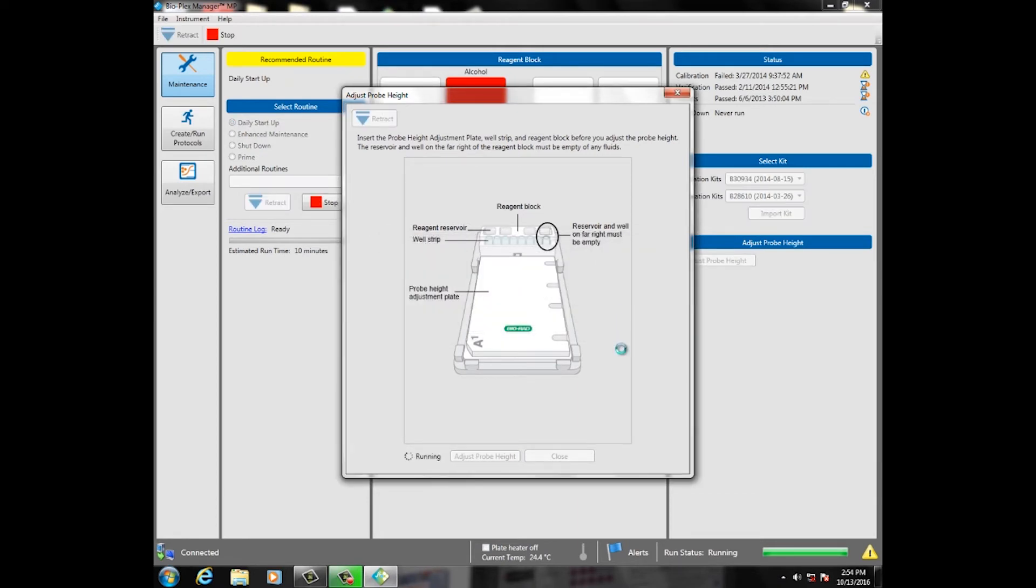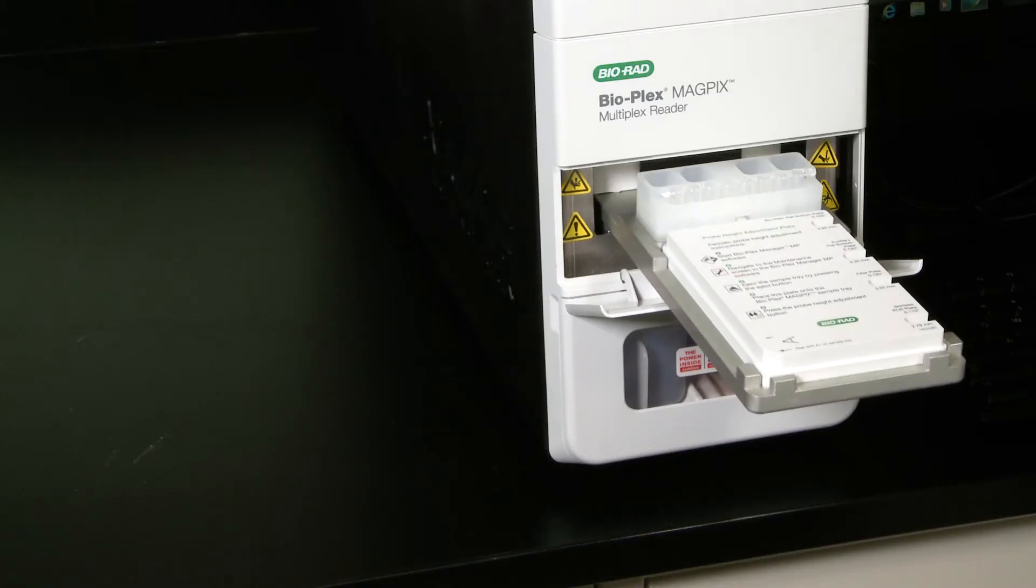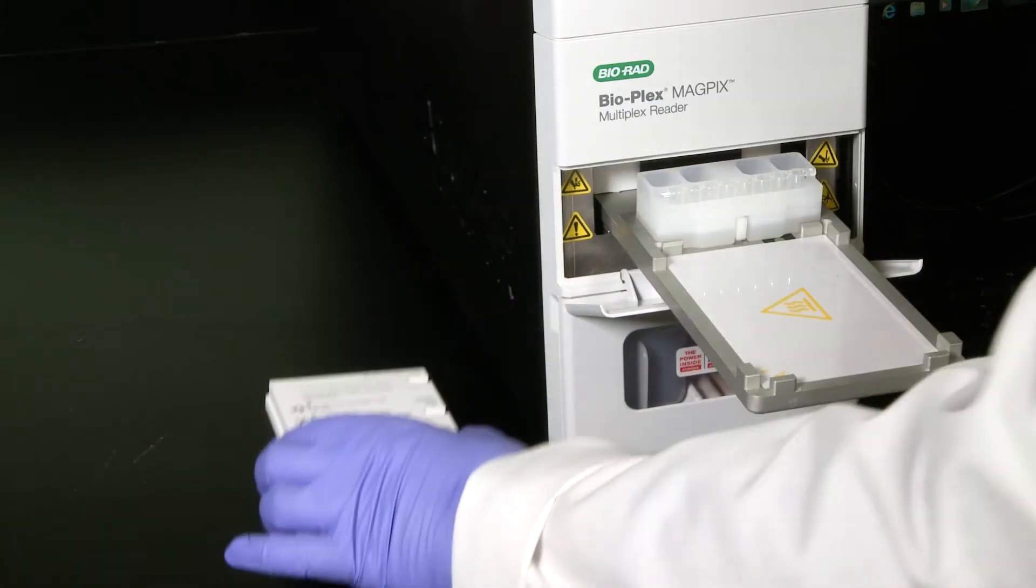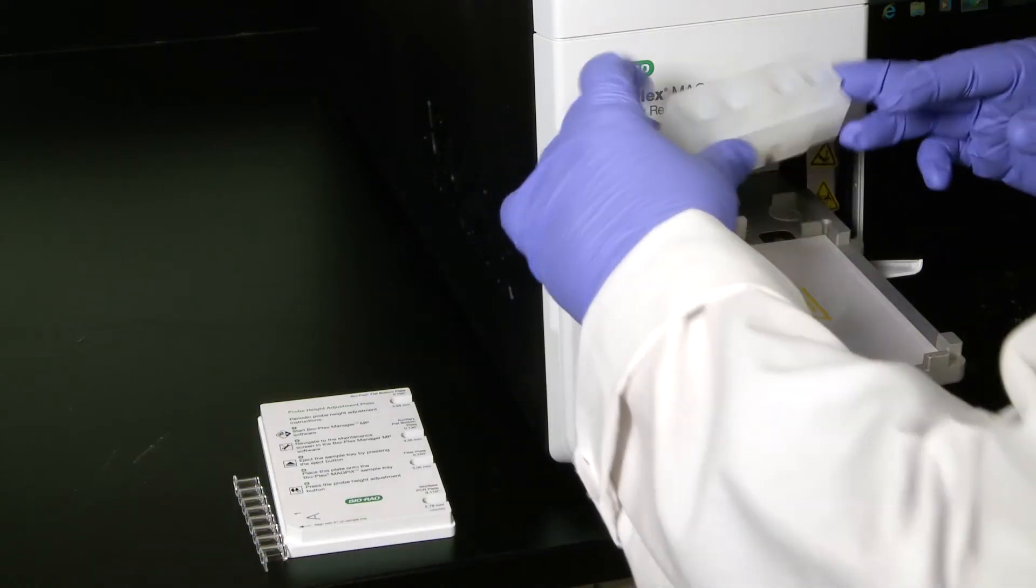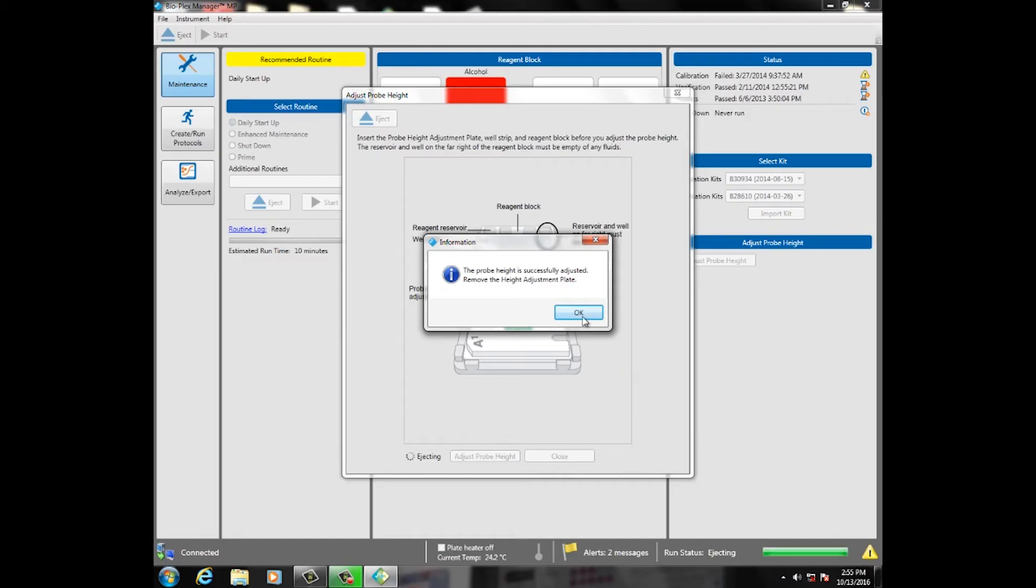Once the adjustment is complete, the sample tray will automatically eject. Remove the probe height adjustment plate, then click OK.